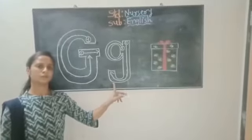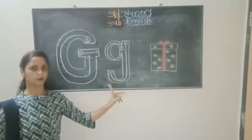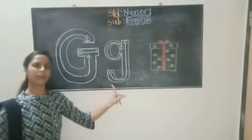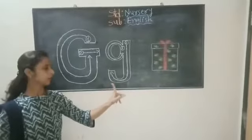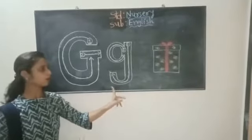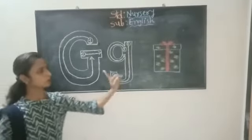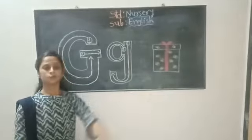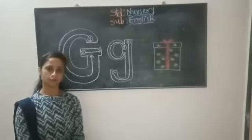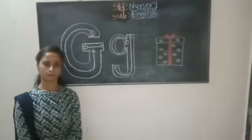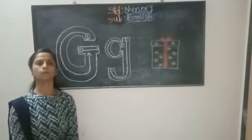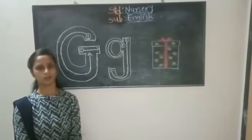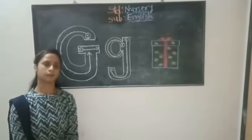This is called Baby G for got. Baby G for get. Baby G for guava. Baby G for give. So children, everyone complete your work in alphabet writing book, page number 24 and 25. Thank you.